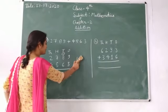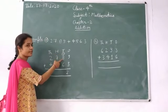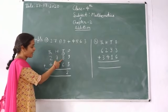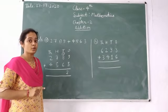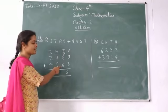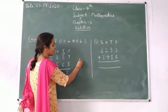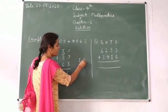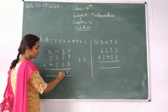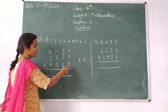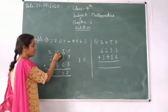Next, tens place: eight plus one — one plus eight — we get nine. And nine plus six — six numbers forward from nine — we get fifteen. For fifteen, write five at the tens place, and carry one to the hundreds place. You can also count these numbers on your fingers.